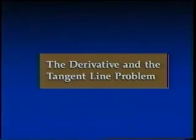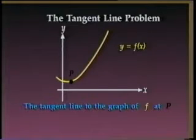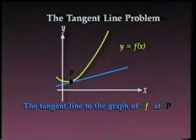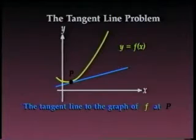We'll consider a curve given by y equals f of x and draw a line that touches the curve at the point p. This line is called the tangent line to the graph of f at p. Our problem is to give a precise definition of the tangent line.